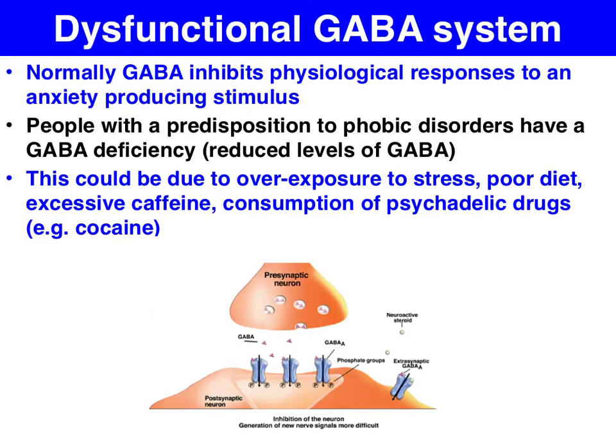So if we're a normal person, when we're exposed to an anxiety-producing stimulus such as heights, it's the GABA that counteracts the effects of the glutamate, which enables us to pay attention and be vigilant. And the GABA will literally moderate our physiological response in terms of our heart rate, adrenaline levels, sweat, etc.